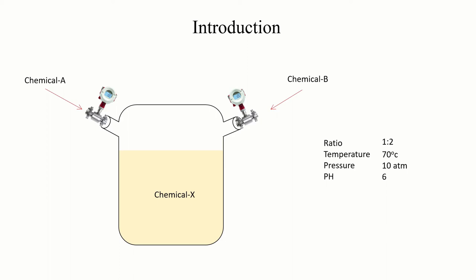Consider the human example: if you want to know whether water in a bucket is warm or cold, you simply immerse your hand — that is how you sense. This is what we do when we want to automate a process. For any automatic process, you will always require sensors. By the way, how many sensors do humans have? Five.